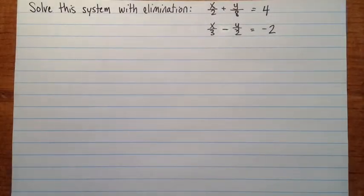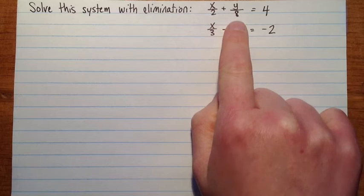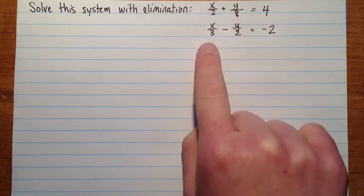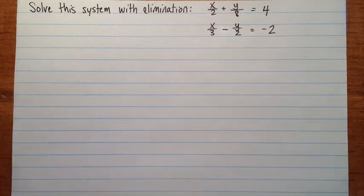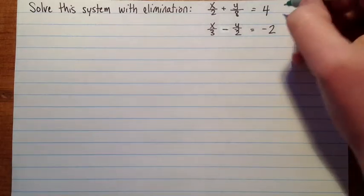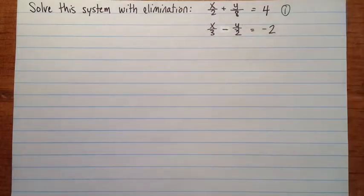Okay, so we've got another system to solve with elimination, and this one is full of fractions. So we have x over 2 plus y over 8 equals 4, and x over 3 subtract y over 2 equals negative 2. So let's name these. That'll be number 1, and this one will be number 2.